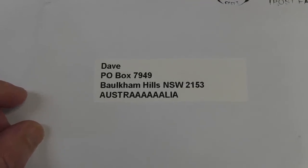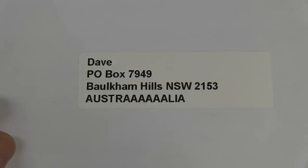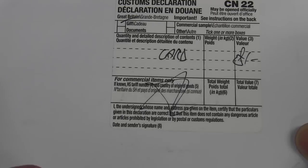And it is addressed to Dave, PO Box 7949, Baulkham Hills, New South Wales, 2153, Australia. Not Austria. And guess who it's from? None other than fellow blogger, Mike, from Mike's Electric Stuff. Hey, Mike. And I haven't disguised his address, because I'm sure he'd want you to send him stuff too. 555 Timer Avenue, Upper Sideband, Essex, UK. I'm sure it would get there.